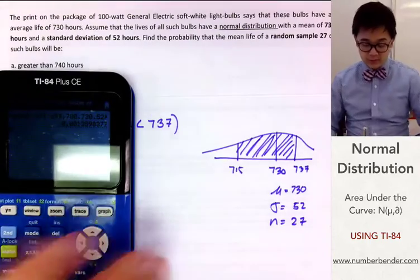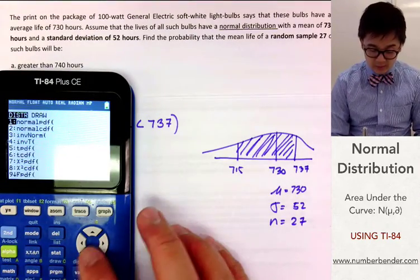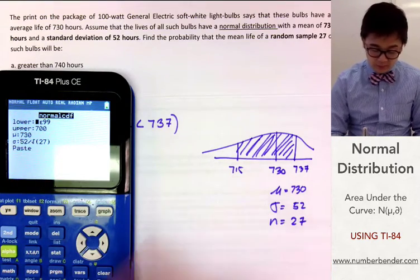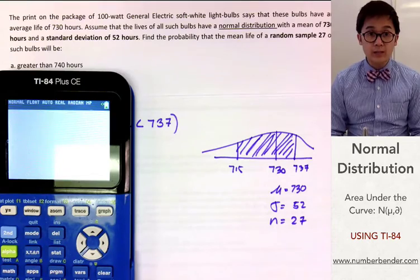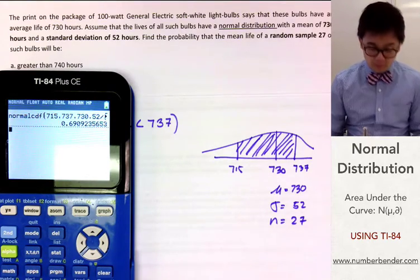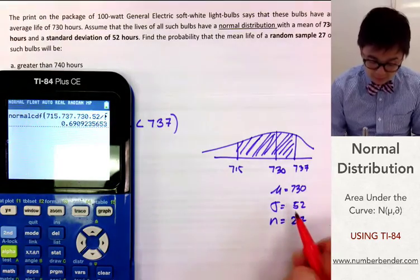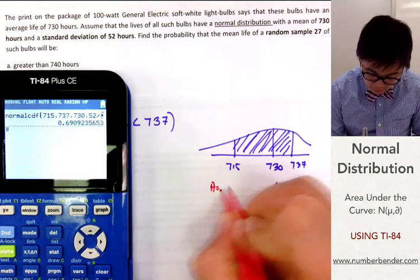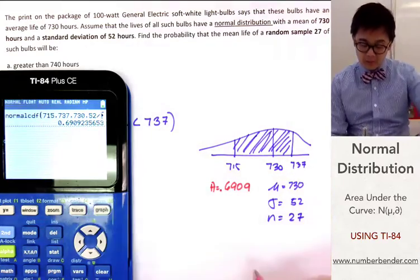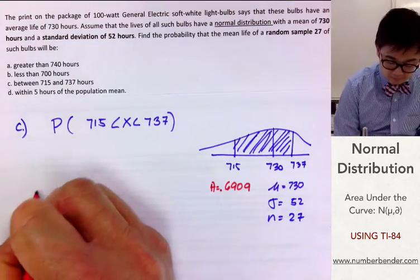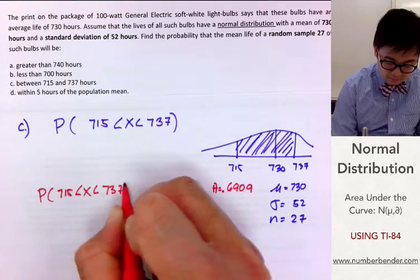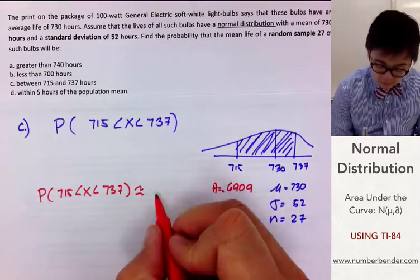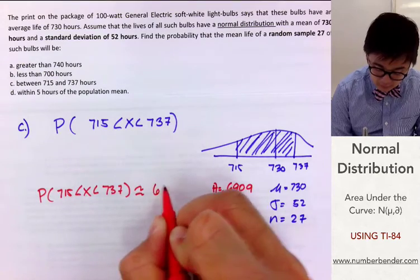Using Normal CDF, the lower is 715 and the upper is 737. The mean and standard deviation remain the same. The calculator gives a value of 0.6909. So the probability that the mean lifespan is between 715 and 737 hours is about 69.09%.